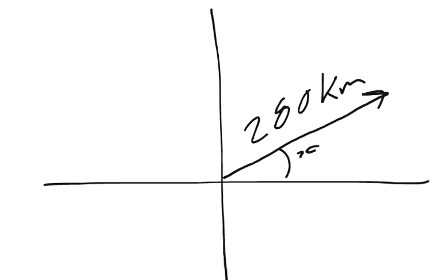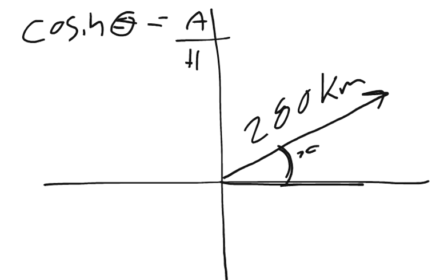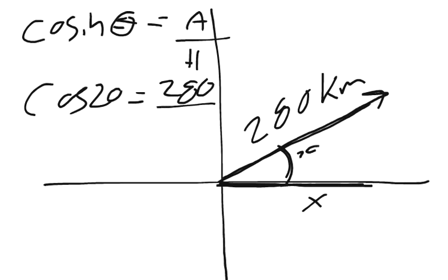And so I can use the cosine, because cosine of theta, cosine of my angle, is going to equal the ratio of the adjacent over the hypotenuse. So this is my adjacent, I'm talking about this angle, this side is adjacent to that angle, and this is the hypotenuse. So I know that my cosine of 20 degrees equals x over 280.